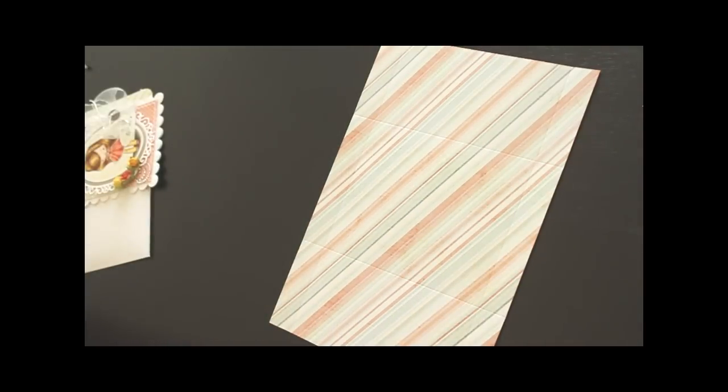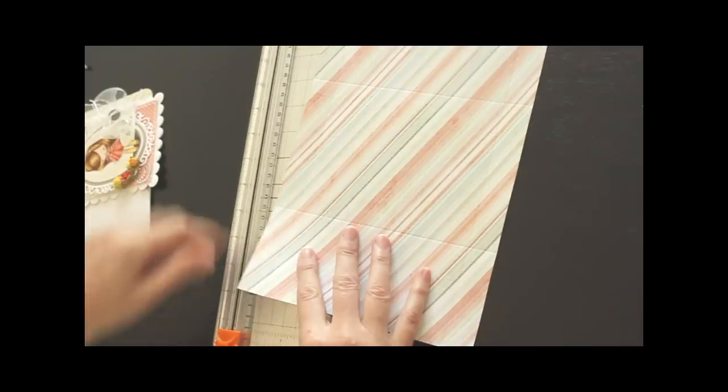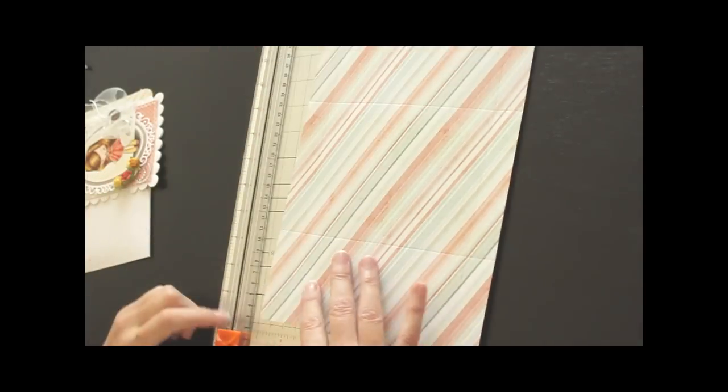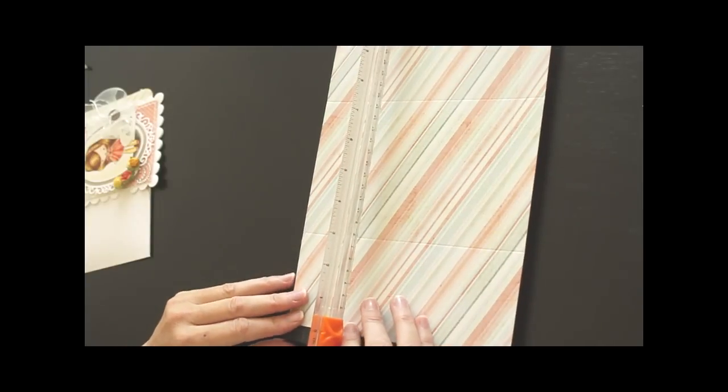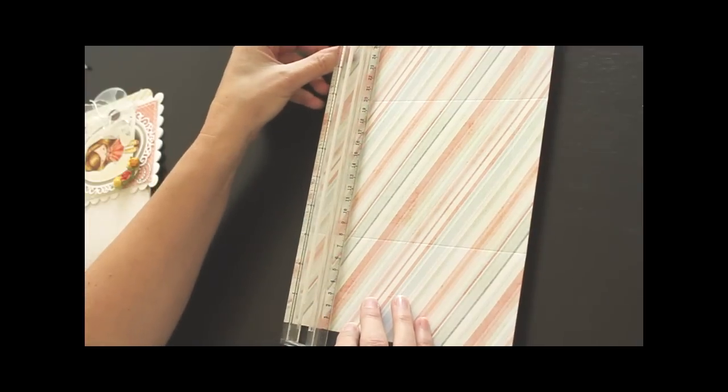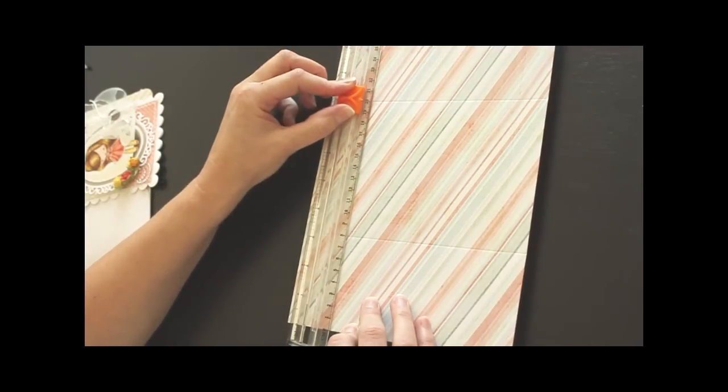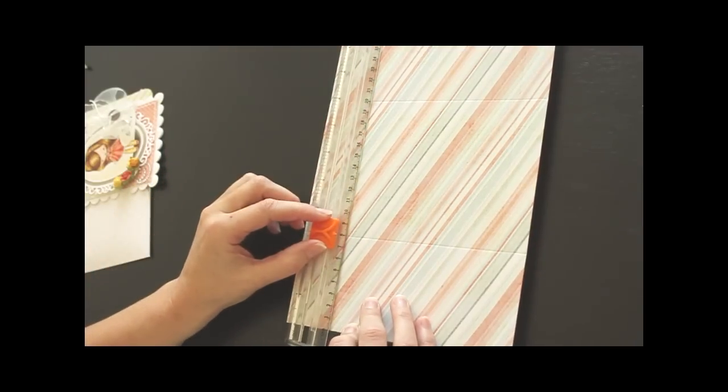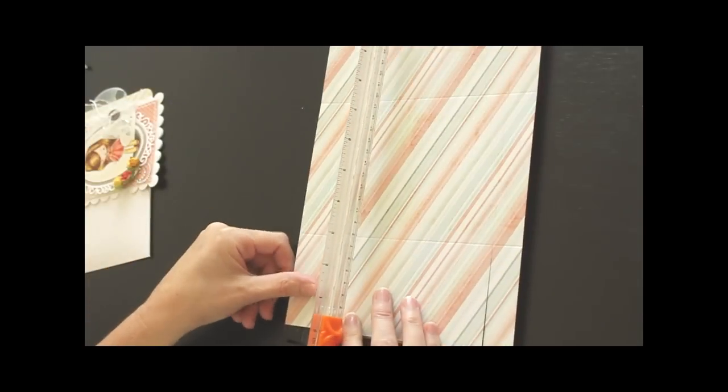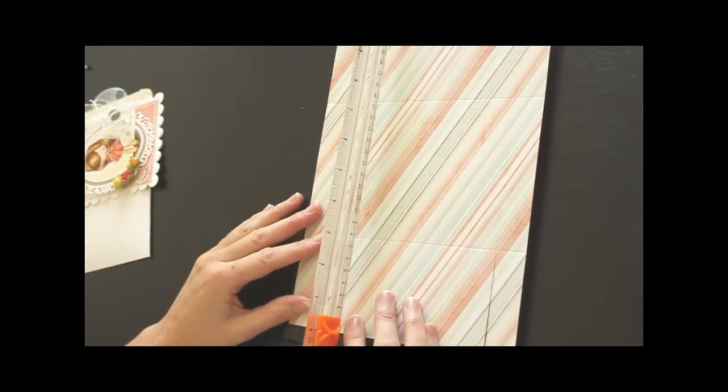Now we need the paper cutter again. We have these tabs here, and we're going to cut the outer ones off, leaving only the middle. Just line it up with 1 1/8 of an inch, or just in the groove line again. Line the groove line up with your cutting line, the paper cutter, and cut until you hit the score line, the horizontal score line. Flip over and do the same on the other side.